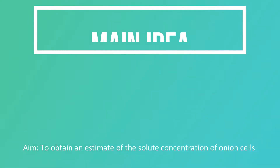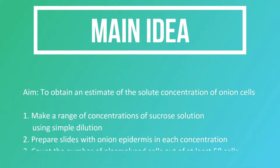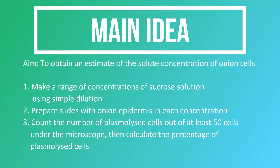Hello. Today's experiment will be to obtain an estimate of the solute concentration of onion cells by observing the state of plasmolysis. Our experiment is relatively simple. We'll make a range of concentrations of sucrose solution using simple dilution, then we'll prepare slides with onion epidermis in each concentration, count the number of plasmolyzed cells out of at least 50 different cells, and calculate our percentage of plasmolyzed cells. We'll do this for every concentration so we can estimate the solute concentration.